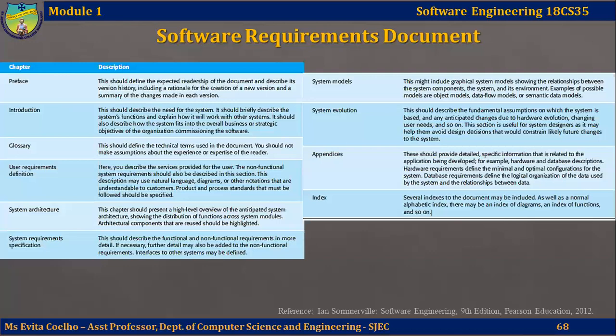The system evolution section is extremely useful to designers of the system. This is followed by appendices, which provide detailed specific information related to the application being developed — for example, hardware and database descriptions. Lastly, the index: several indexes to the document may be included, such as a normal alphabetic index, an index of diagrams, an index of functions, and so on.